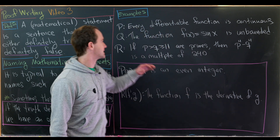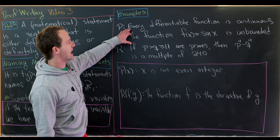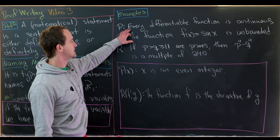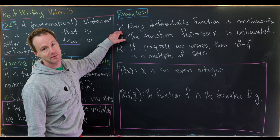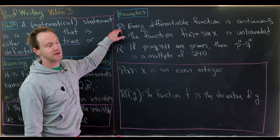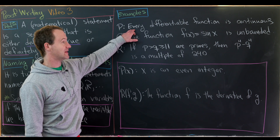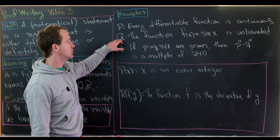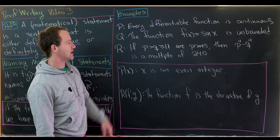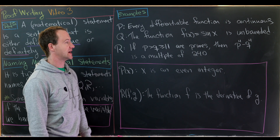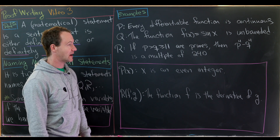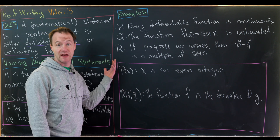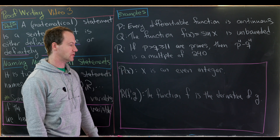Let's look at some examples. We could call p the statement 'every differentiable function is continuous' — we've named that sentence p. And q could be the statement 'the function f(x) = sin x is unbounded' — we've named that sentence q.